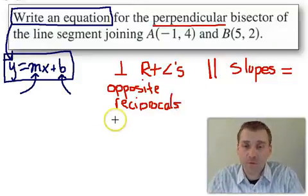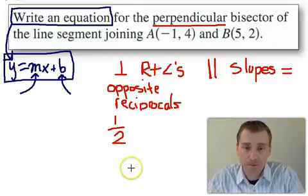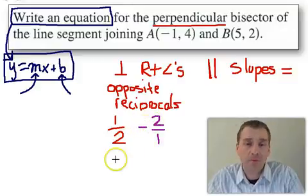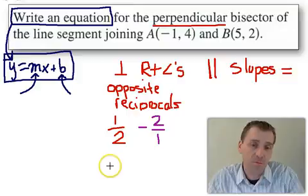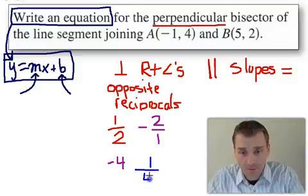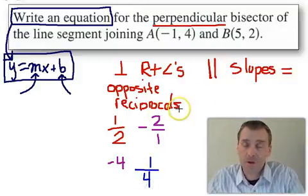So, if you've got one as one-half, the opposite reciprocal to that would be negative two over one. So, you flip it, and you change the sign. Now, I just write this as negative two, but that's the scoop. So, if you have one slope maybe that's negative four, well, the opposite reciprocal of that would be one over positive four. So, opposite signs and flip it.